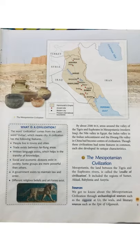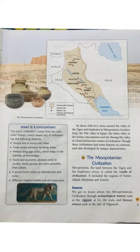Archaeological sources include the ziggurat and seals. A ziggurat is a rectangular stepped tower building — stepped means it has stairs on it — and it was surmounted by a temple on top. On page number 11, you can see its picture.